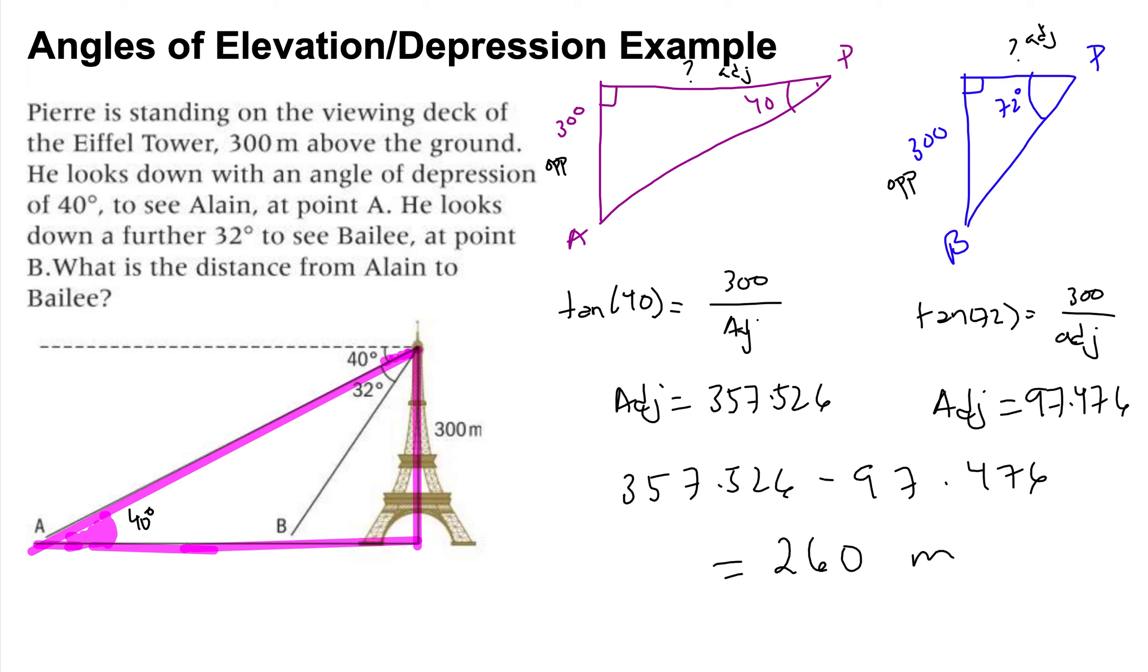And then we could do the same thing with Bailey. So this was my Z, which means if this is 72, then this has to be my 72 as well, which means my other triangle is this. And I can erase the additional triangles here.